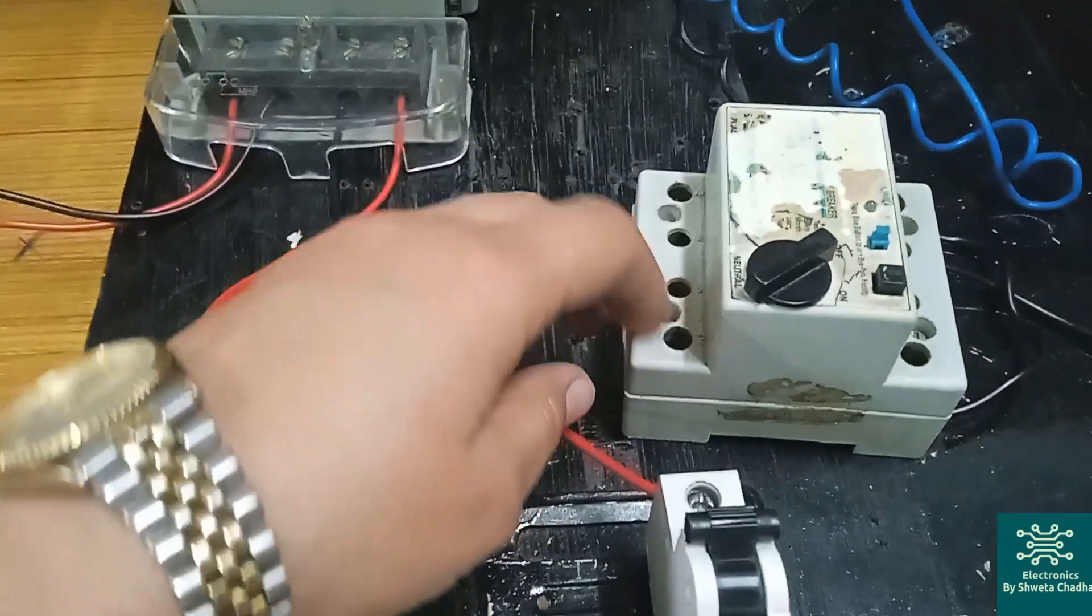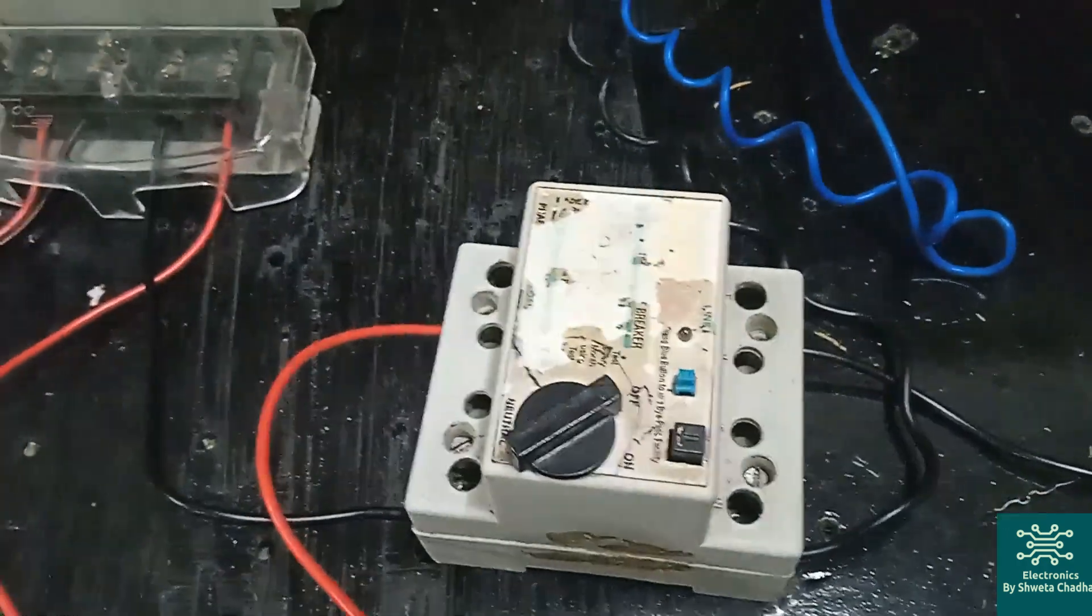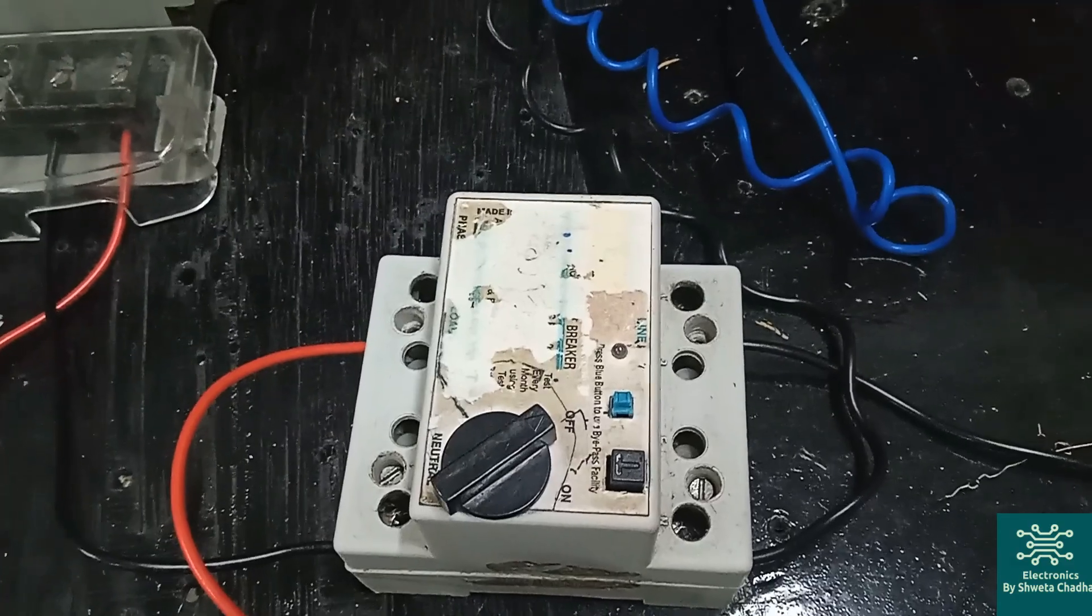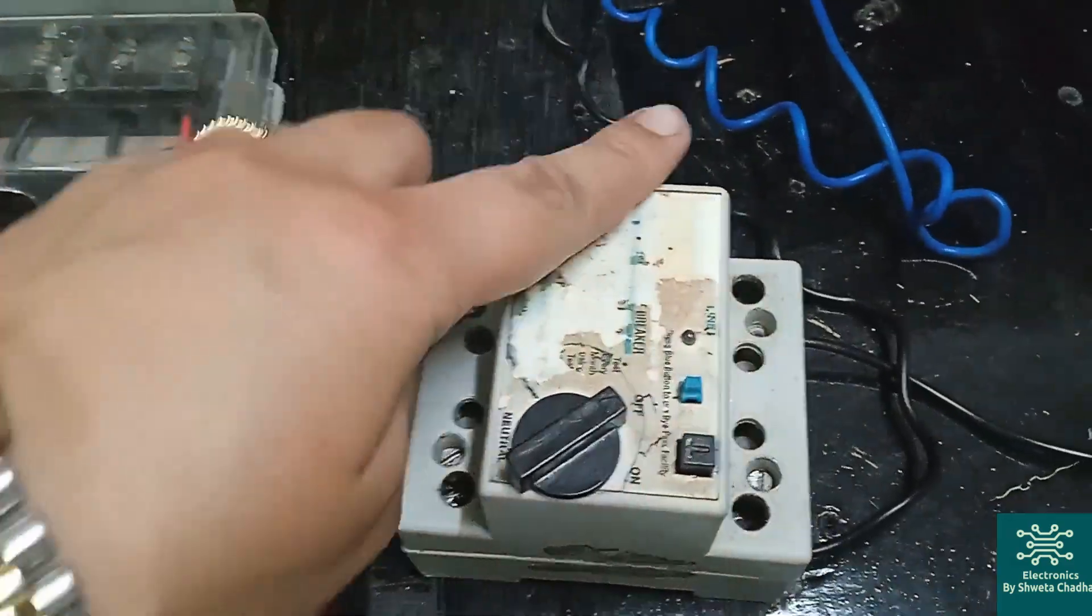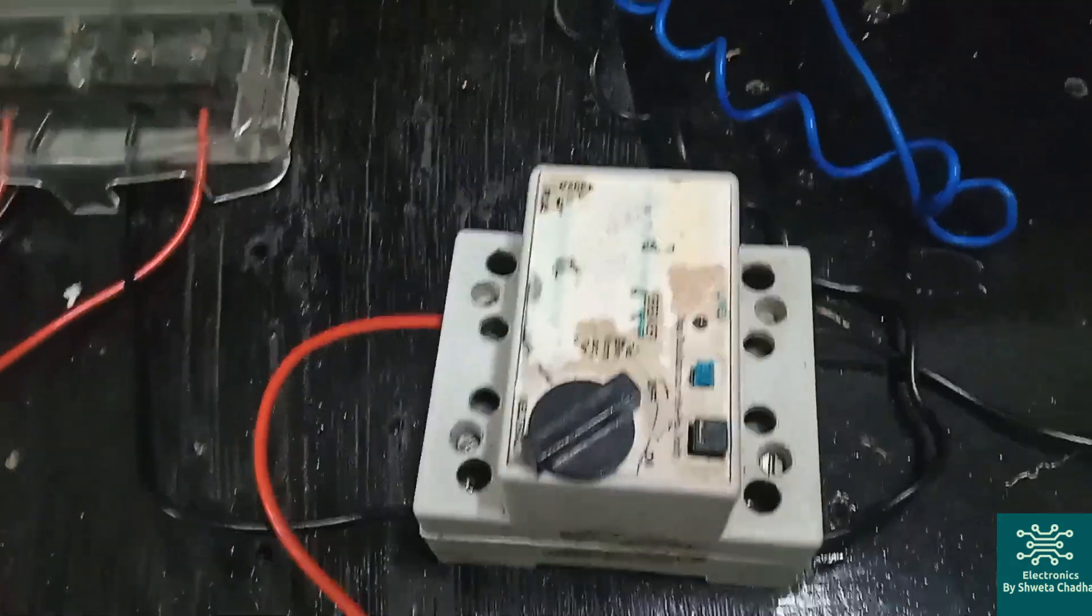After which, the output of MCB is now connected with ELCB. So please have a look over here. This is your ELCB, Earth Leakage Circuit Breaker. In ELCB, we have total 4 terminals, 2 input and 2 output.